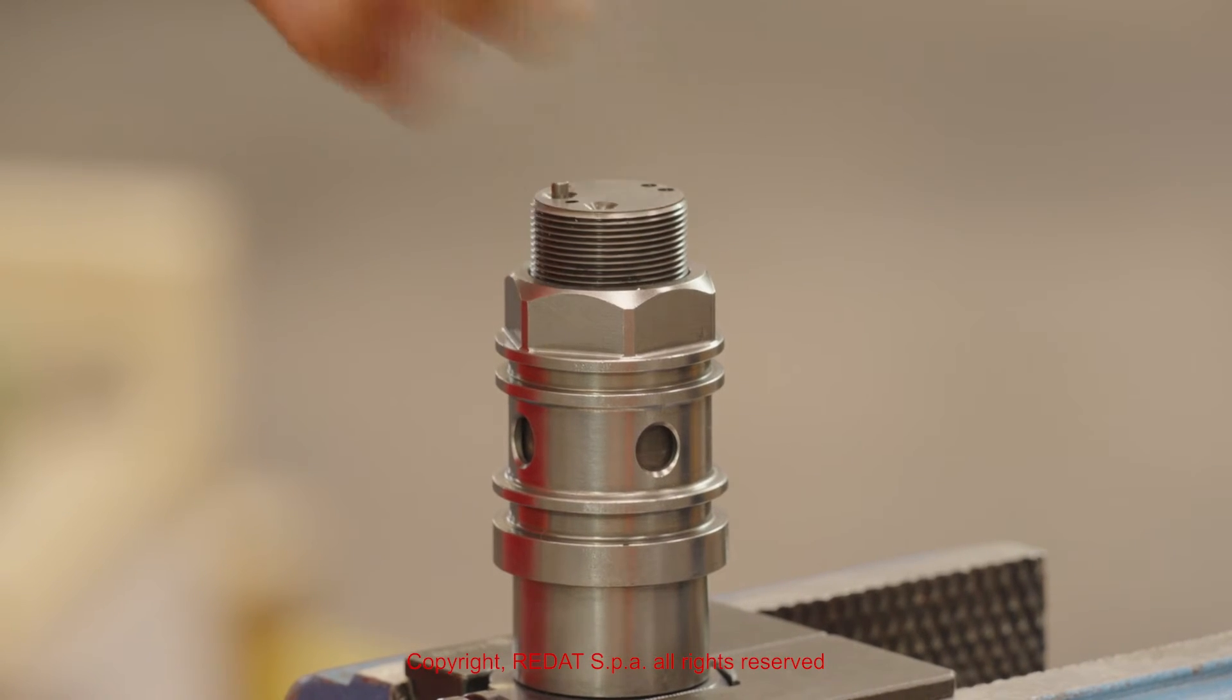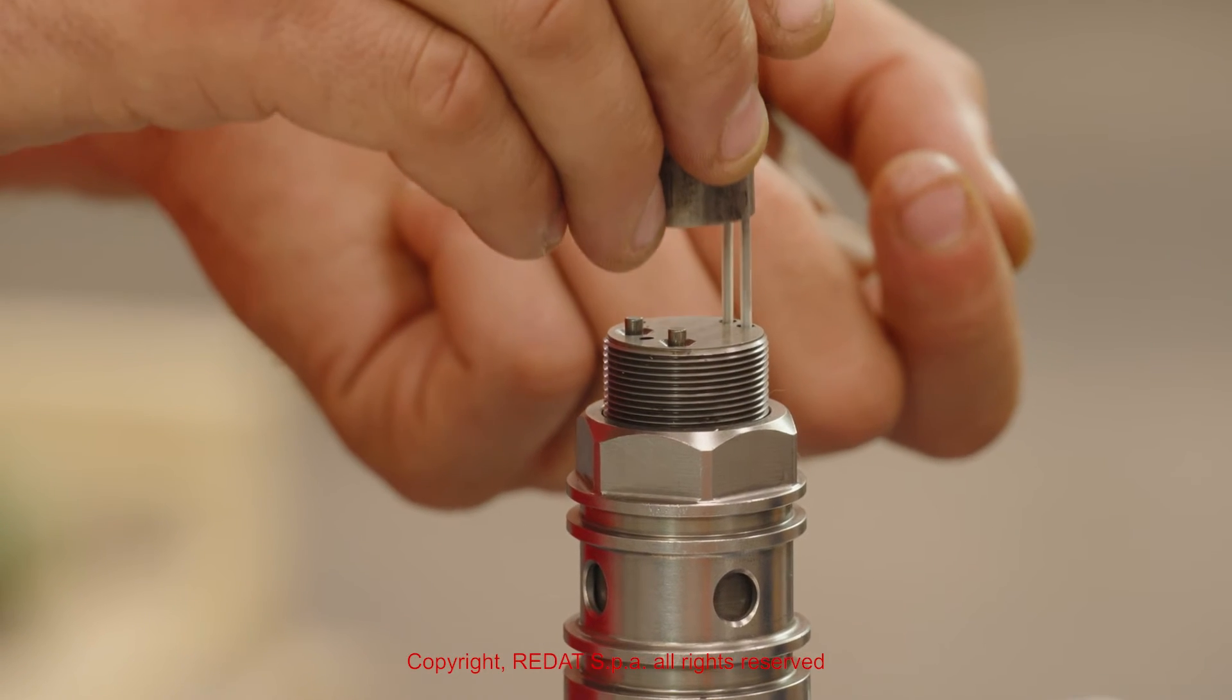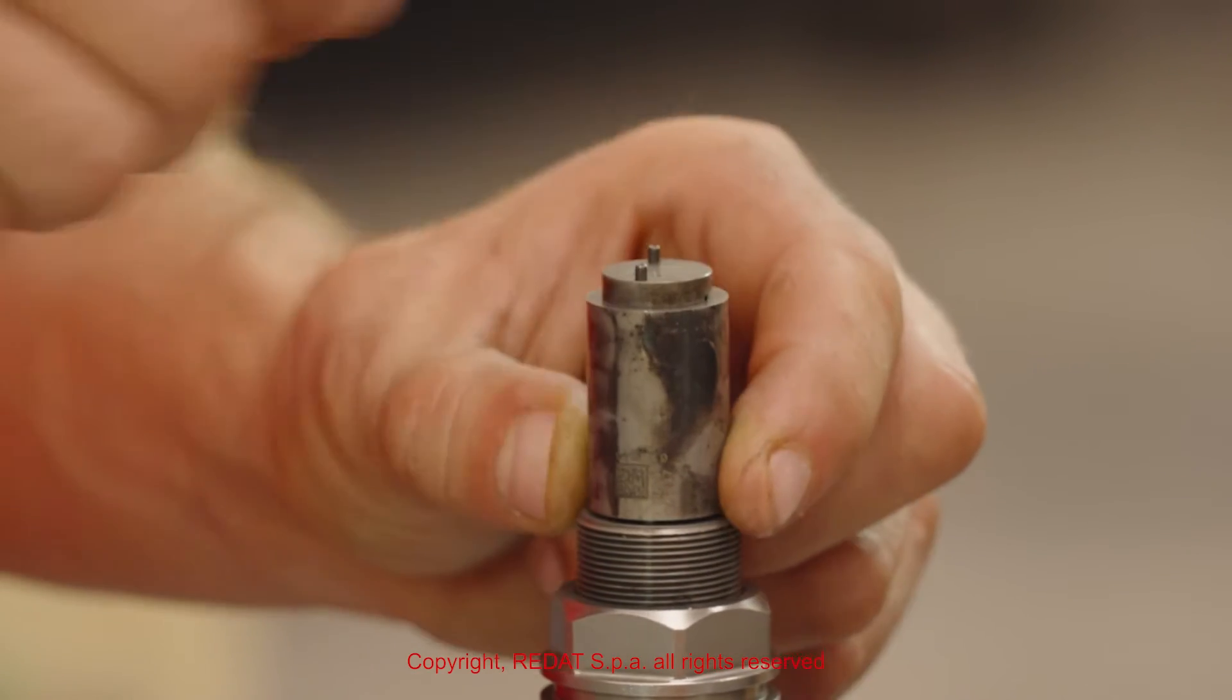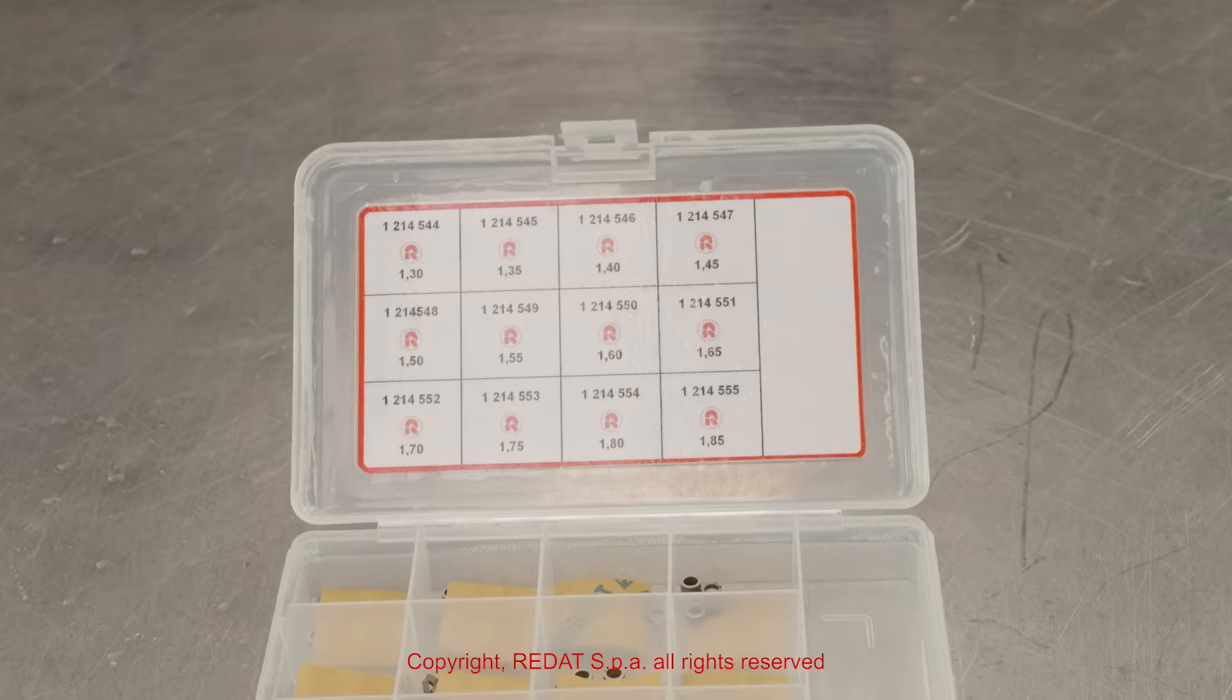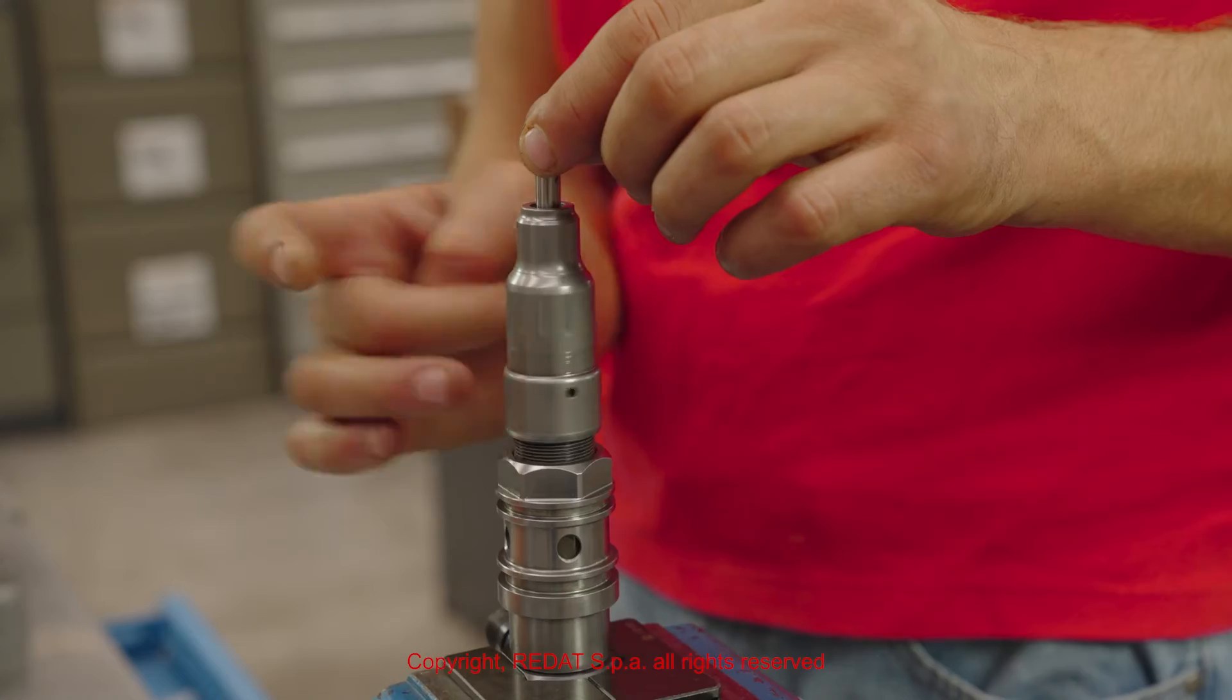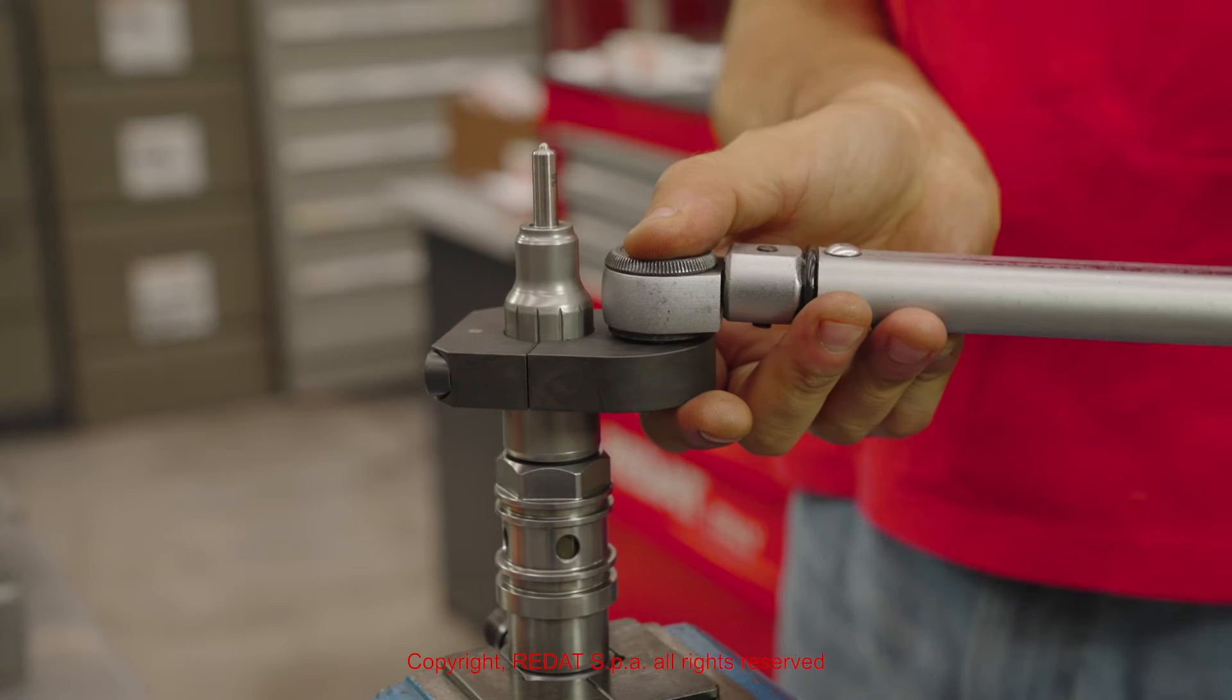We then assemble the other components. We now proceed to the assembly of the nozzle using the calibration shims in the kit 1 2 1 4 5 3 5. We can calibrate it correctly. With the wrench 4 0 2 1 9 0 5, we tighten the nozzle nut to 105 Nm.